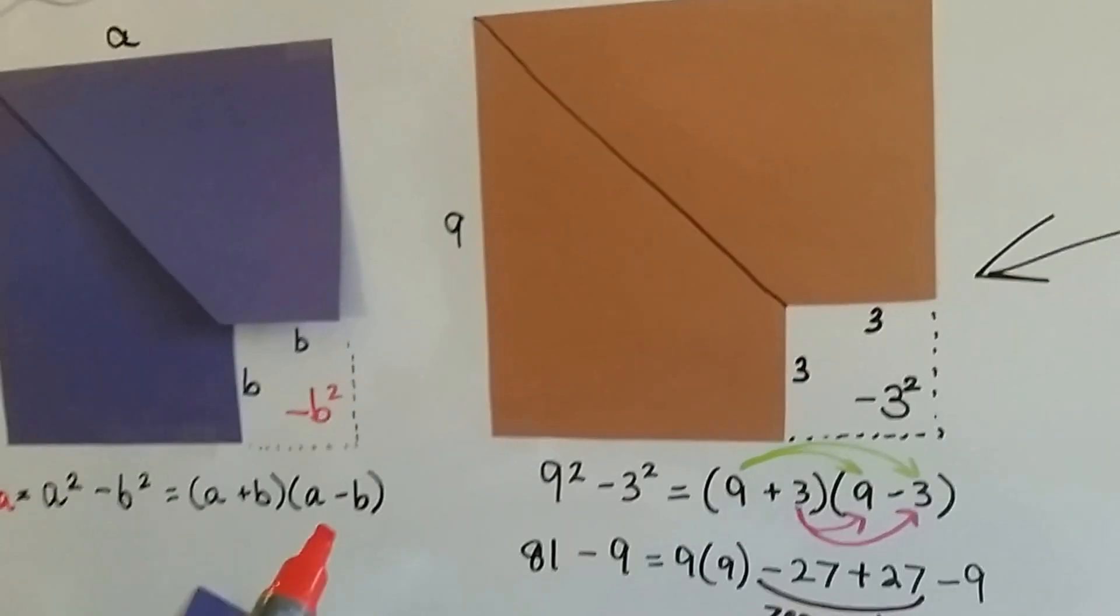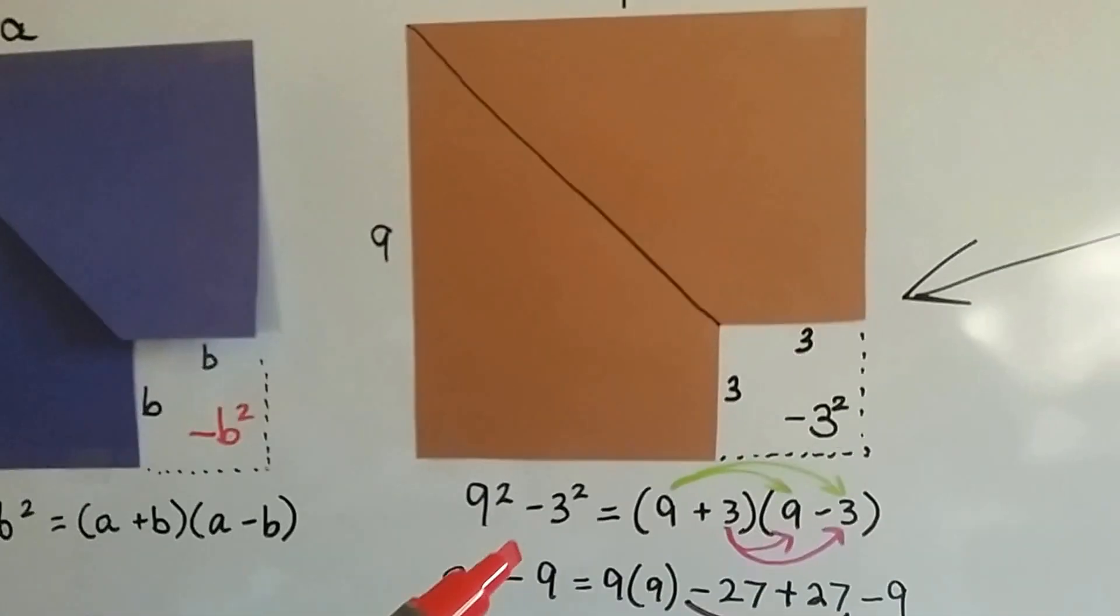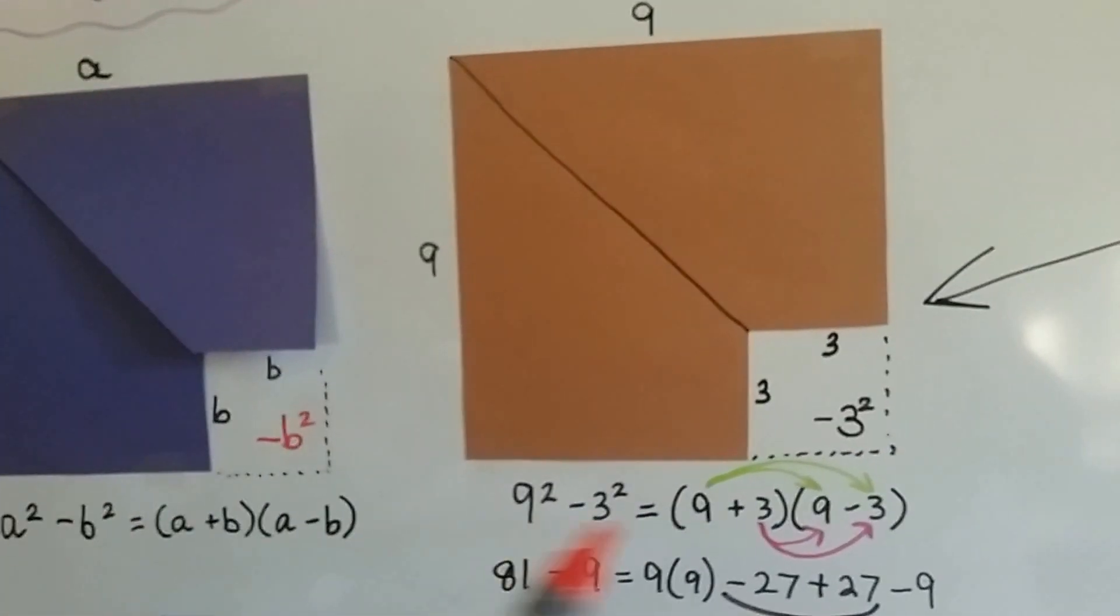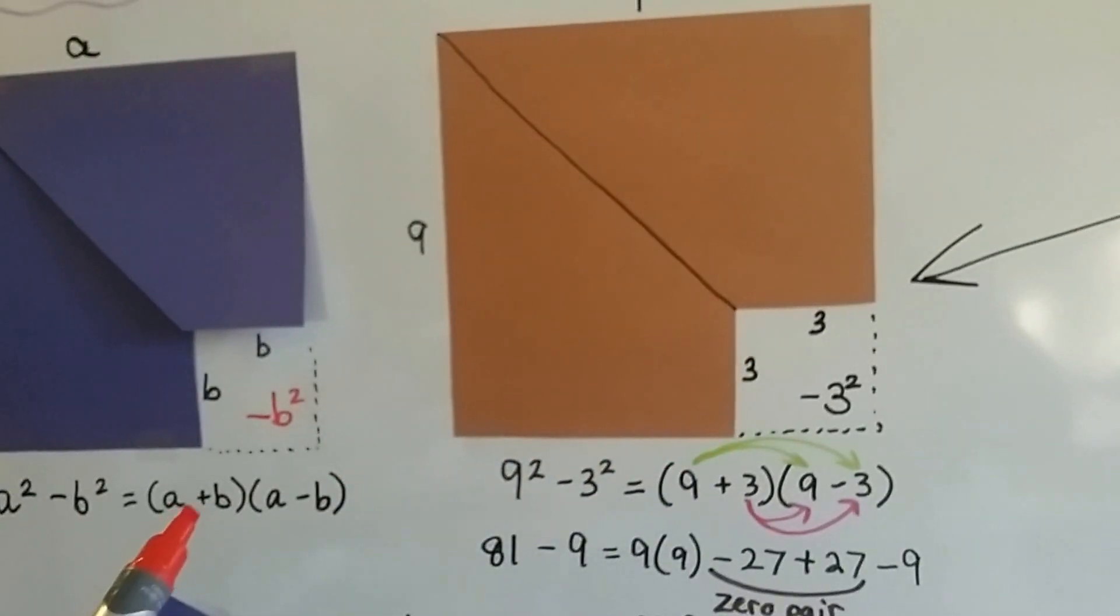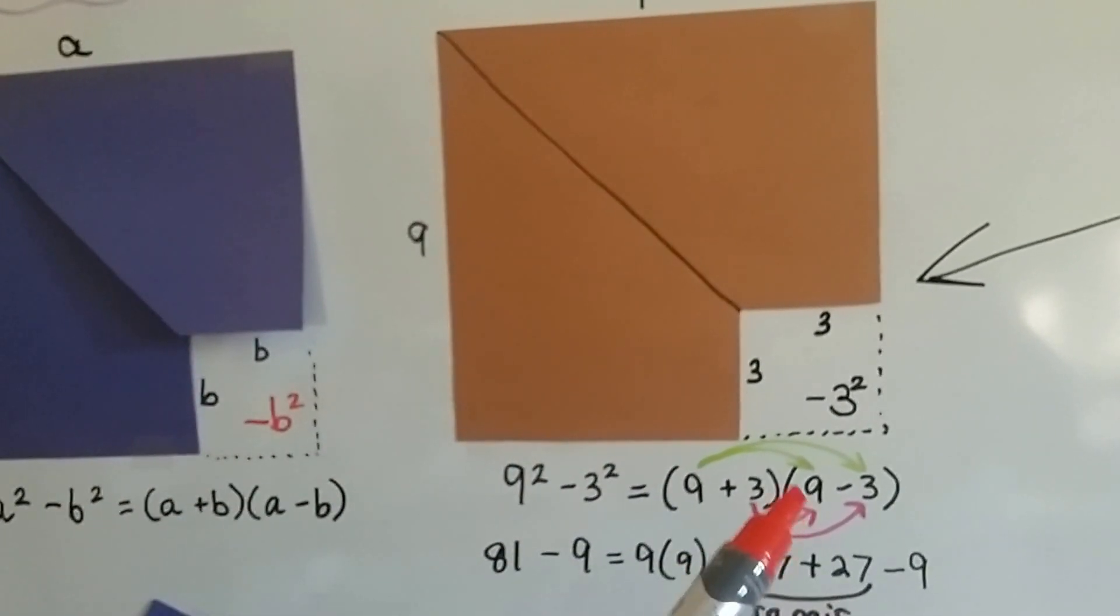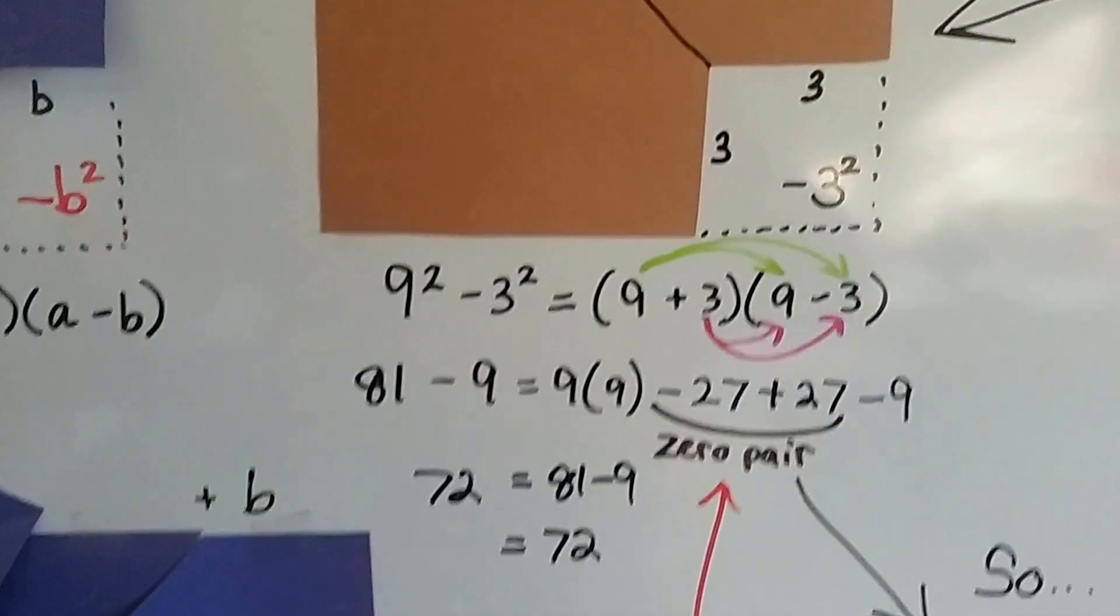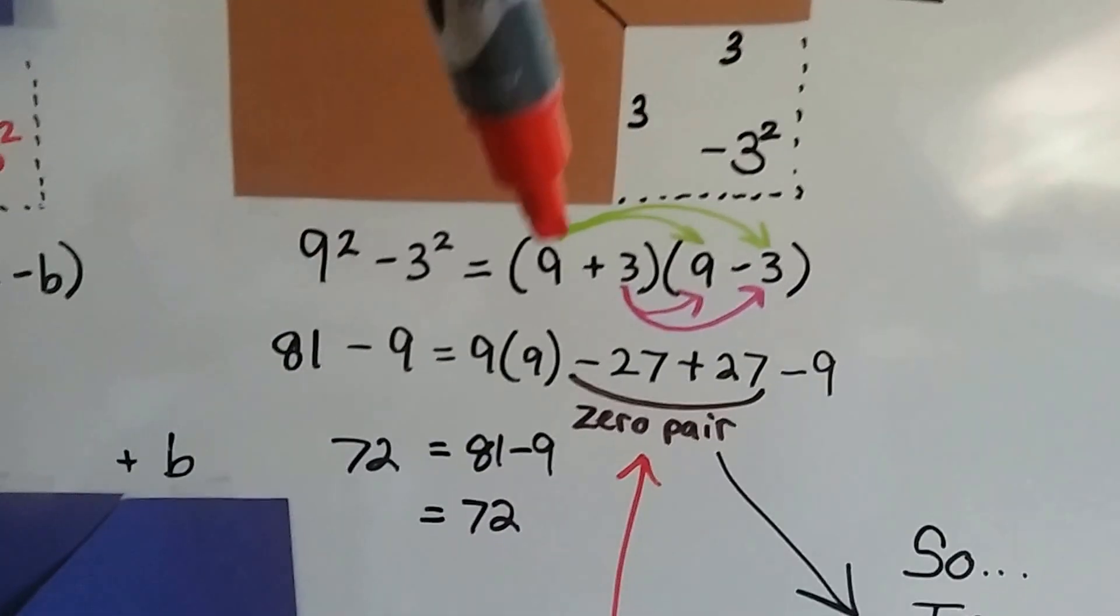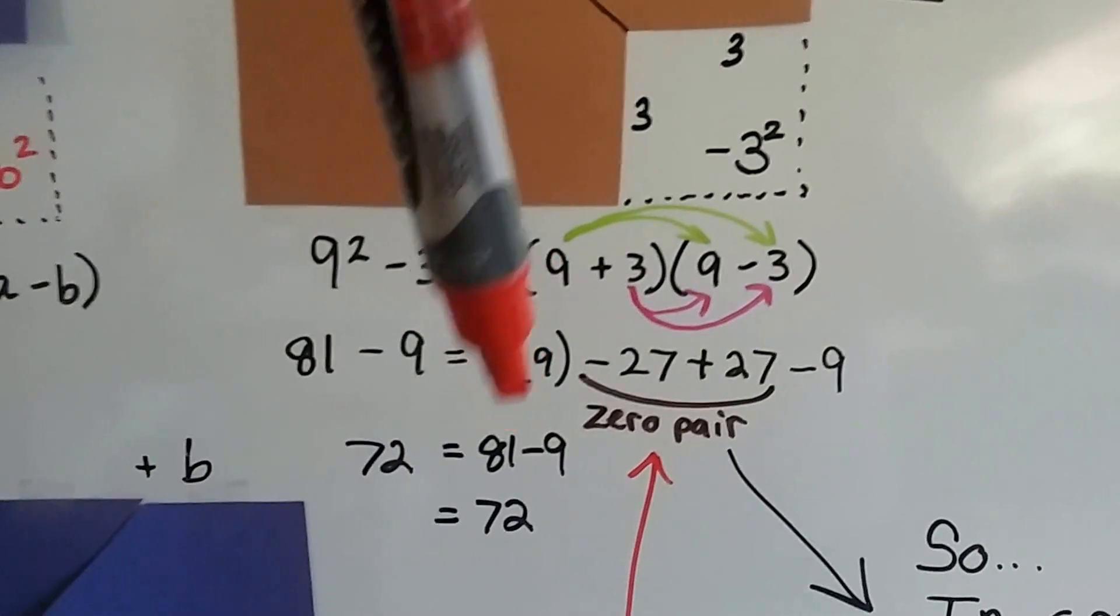So what we do is we follow this a plus b, a minus b formula, and we plug in our numbers. We end up with 9 is the a, and we're going to add 3, plus b. Then we're going to do a minus b, so that would be 9 minus 3. Alright, so now let's FOIL and see what happens here. So we get 9 times 9, that's 81.